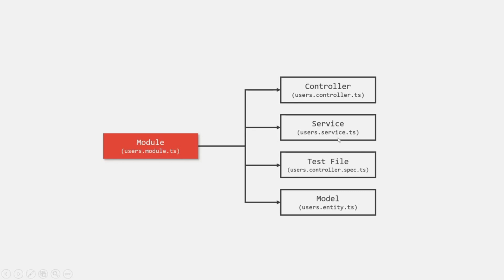When you create a service file, that file name must have .service in it. This is just a naming convention — it is not required. But when you add .service or .controller in the file name, it basically tells the developer that that particular file is a controller file, or a service file, or a test file, or a model file. So for a model file, it should have .entity in it. For a test file, it should be controller.spec.ts. For a controller file, it should have .controller in it, ending with .controller.ts. And for a service file, it should end with .service.ts.